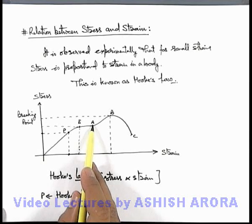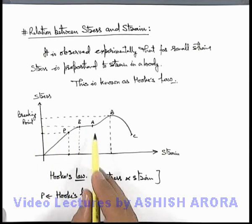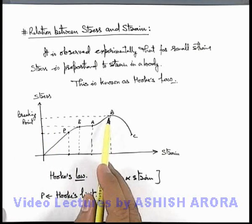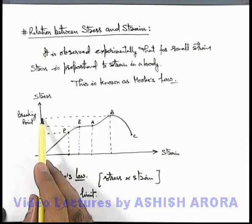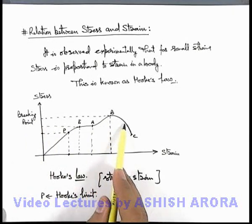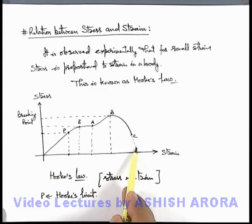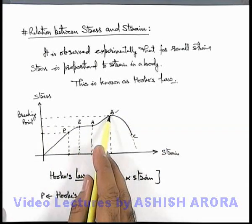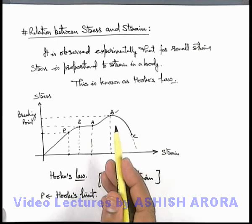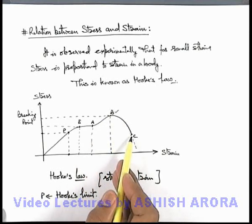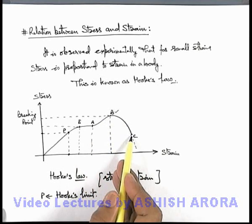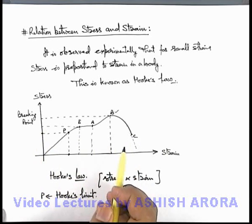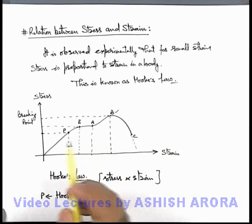After point A, a slight increase in stress causes strain to reach up to value B. Beyond point B, even if the stress is removed, the strain continuously increases until the body breaks. Point B is the breaking point — beyond this value the body will automatically elongate and break down without any requirement of further stress. This is how a body behaves when it is placed under stress.